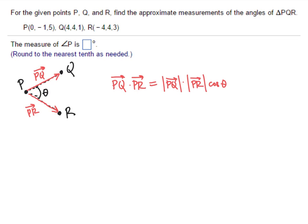So first things first, how do we find PQ? The vector from P to Q is the coordinates of Q minus the coordinates of P. So that's going to be 4 minus 0, comma, 4 minus negative 1, comma, 1 minus 5. So that means our vector is 4, 5, negative 4.